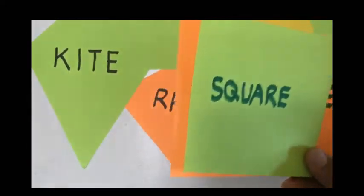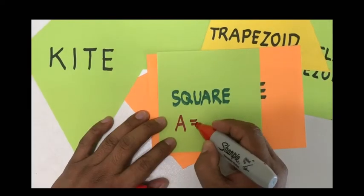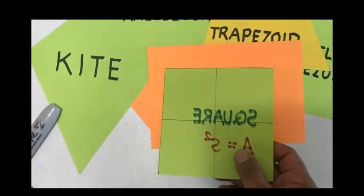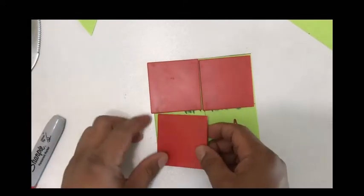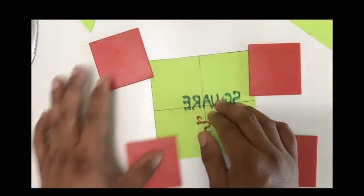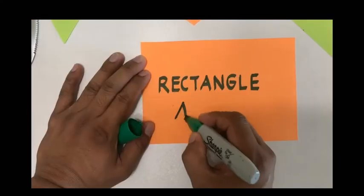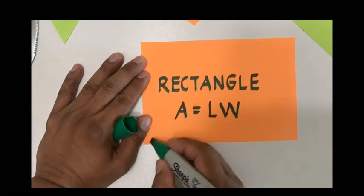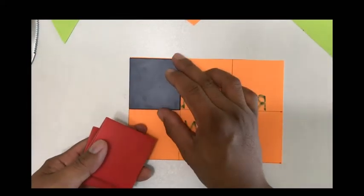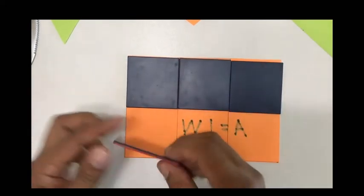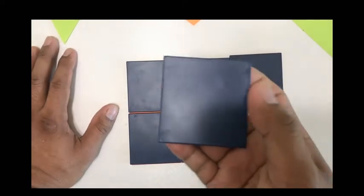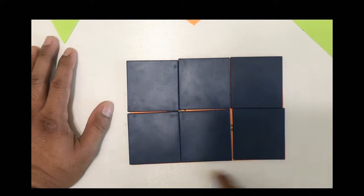We start with something we are familiar with. We know the formula for the area of a square: area equals side squared, where this length and that length are the sides. The area of the square is the number of square units we can use to cover the space — in our case, 4 square units. For a rectangle, A equals length times width. The area of the rectangle is also the number of square units used to cover it completely. In this case, the area is 6 square units, which we get by multiplying the length of 3 and the width of 2.